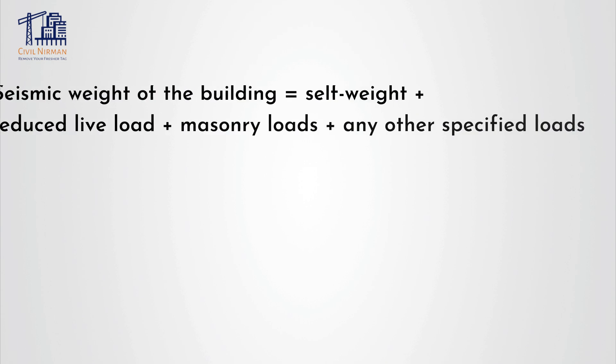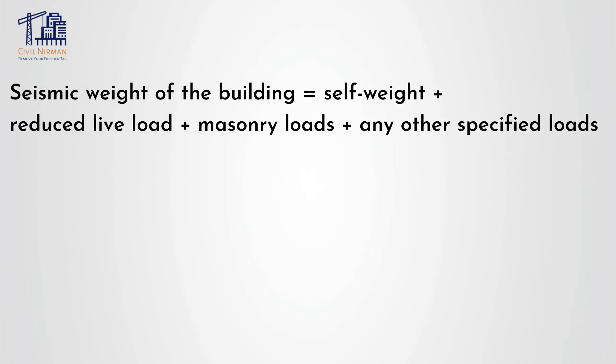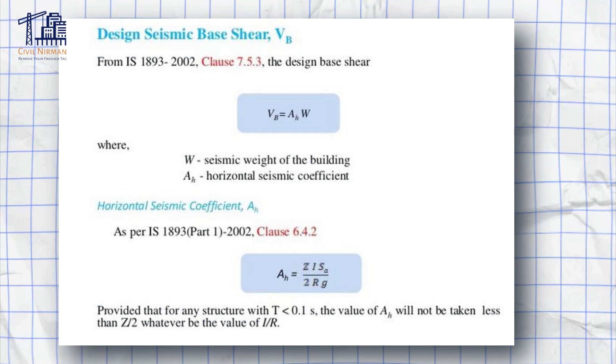For calculating the seismic weight of the building, you can utilize self-weight, reduced live load, masonry loads, and any other specified loads to arrive at the total weight, which is your seismic weight. This seismic weight can then be multiplied by AH — that is your horizontal acceleration coefficient — as per IS 1893. The above calculation can then be utilized to compare what is obtained using STAAD, ETABS, or any other particular design software.